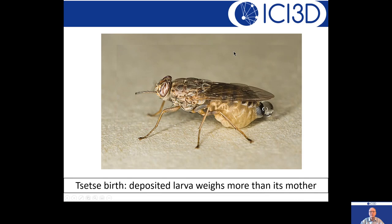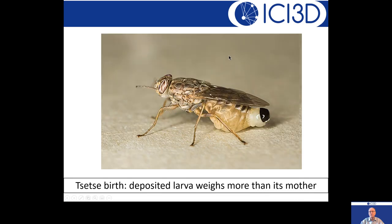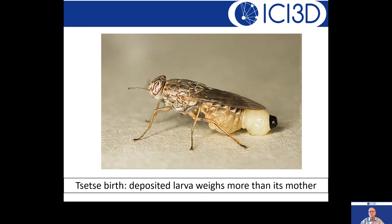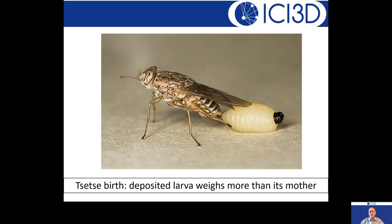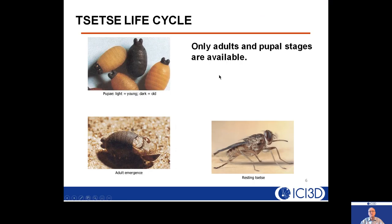The tsetse fly is a very unusual animal. Here we see the start of life — a larva being deposited by its mother. This larva is absolutely huge; it can weigh as much as or even more than its mother. The larva burrows under the ground and forms around itself a hard puparial case, which eventually becomes black. It sits under the ground for a long time and ultimately emerges as the adult tsetse fly.